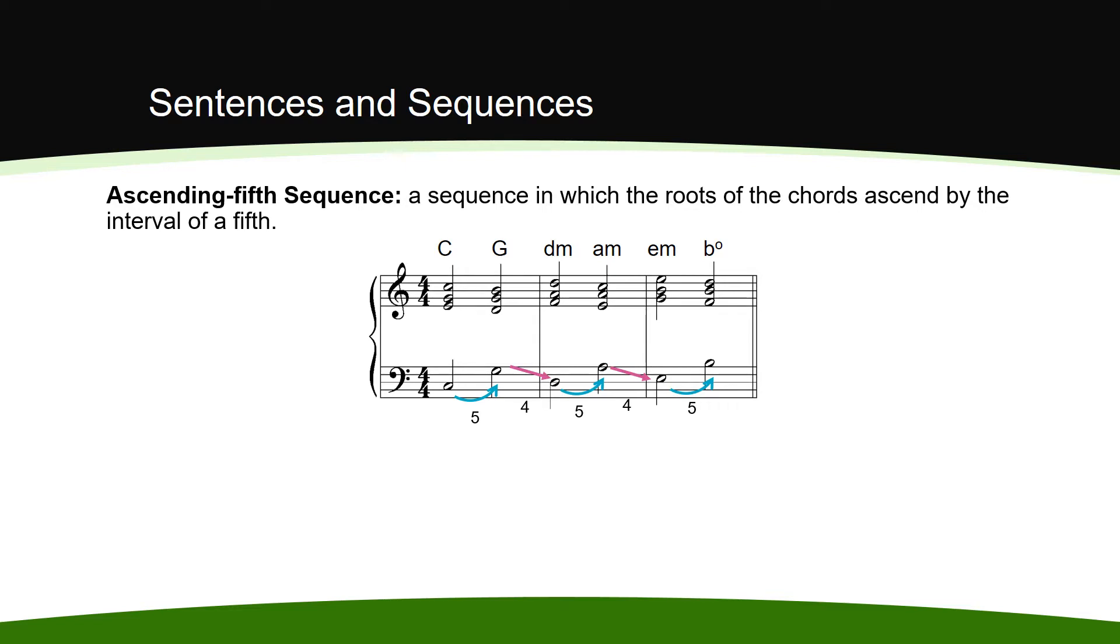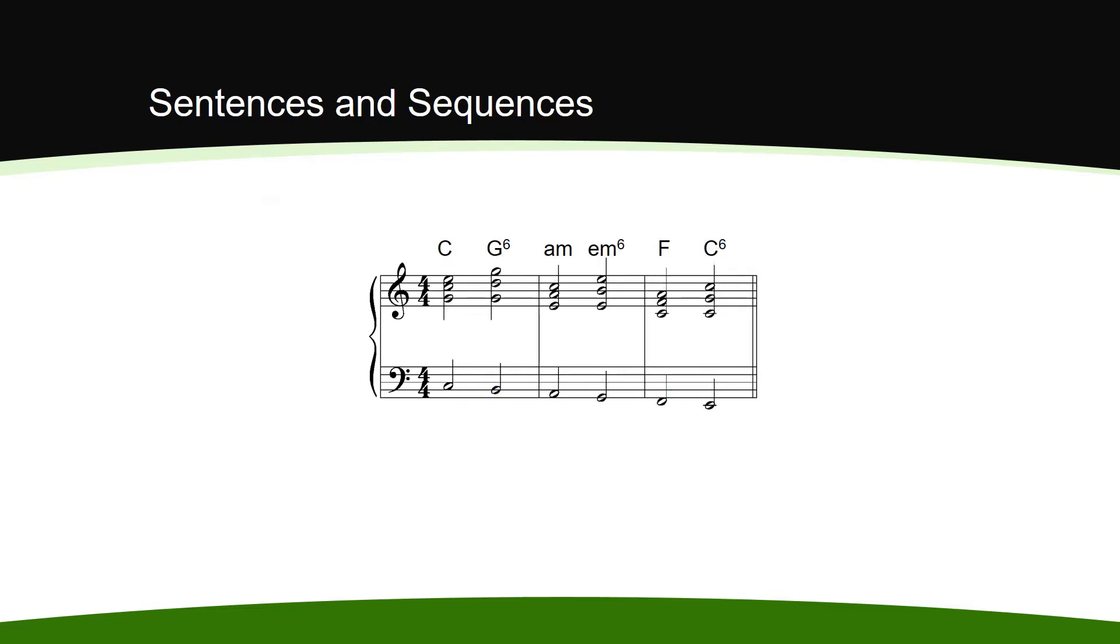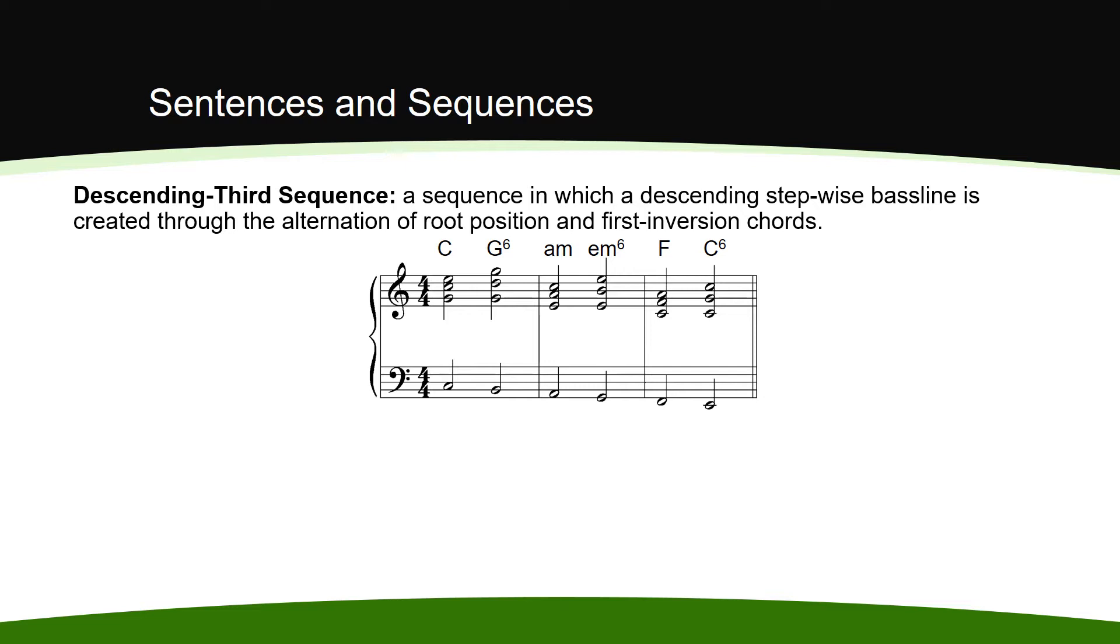In a descending third sequence, a descending stepwise bass line is created through the alternation of root position and first inversion chords. The motion by descending third occurs on every other chord. The intervening first inversion chords are not required, but they create a fluid stepwise descent.